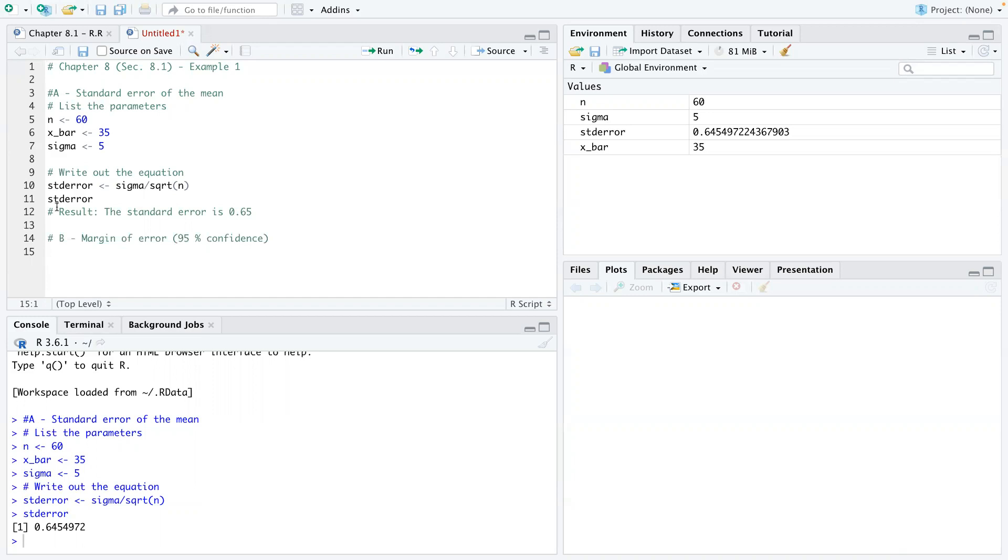And how to also calculate the confidence. So basically, we know the confidence coefficient is 1 minus alpha. So in order to get alpha, we need to do 1 minus the confidence coefficient, which is 0.95. So 1 minus 0.95 gives us alpha, which in this case will be 0.05.